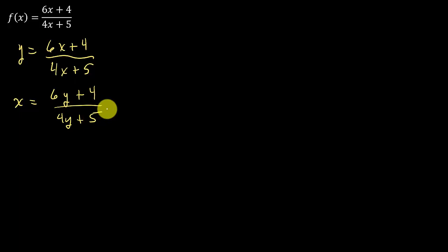And then you solve for y. So to solve for y here, what we'll do is put this over 1 and then we can just cross multiply. So we'll have x times 4y plus 5 equals 1 times 6y plus 4.